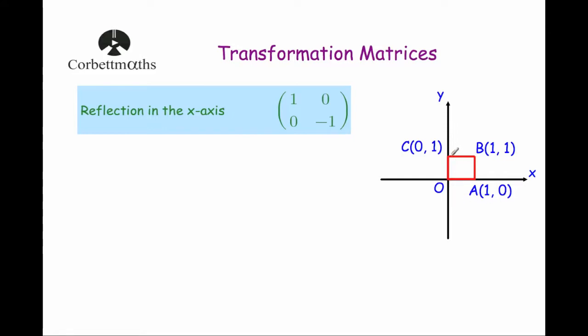So the C will move down to here, the O and the A will stay where they are — they will be invariant — and the point B will reflect down to here. So let's multiply each of these points by the matrix 1, 0, 0, minus 1.